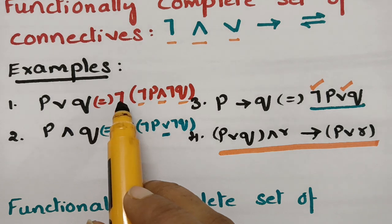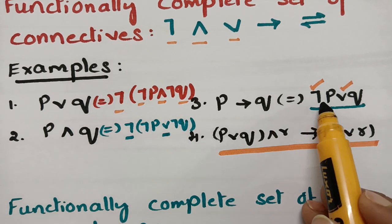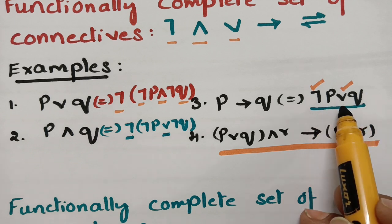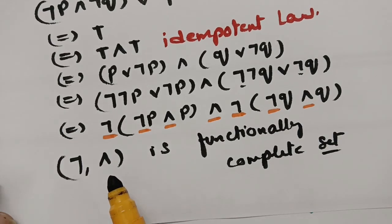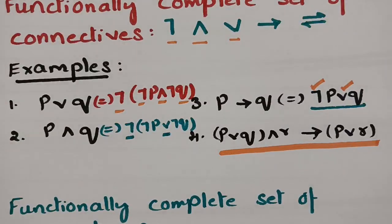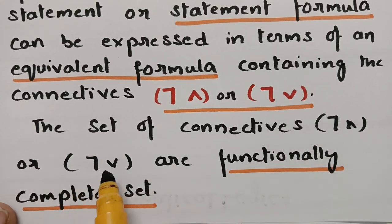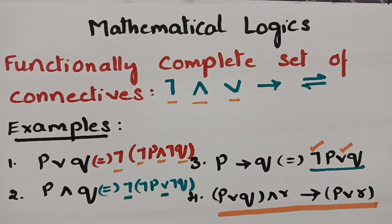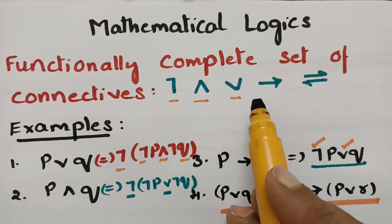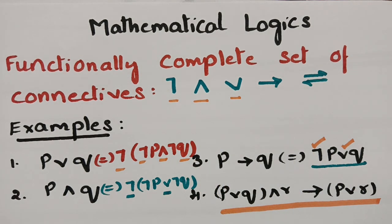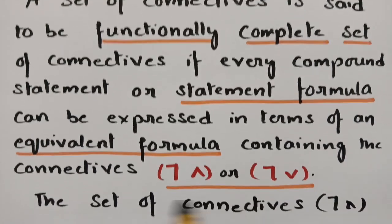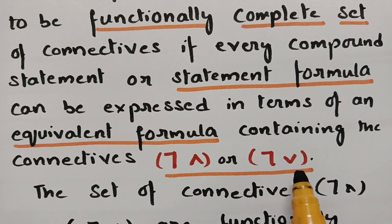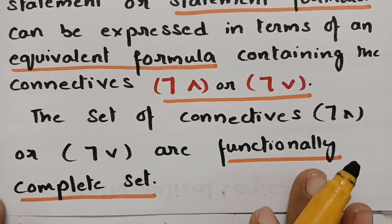In all the examples: here we have negation and conjunction, here negation and disjunction, here also negation and disjunction, and in the last statement negation and conjunction. So the sets {negation, conjunction} and {negation, disjunction} are functionally complete sets. Any equivalent statement or formula which can be expressed containing the connectives negation∧conjunction or negation∧disjunction — those are called the functionally complete set of connectives.